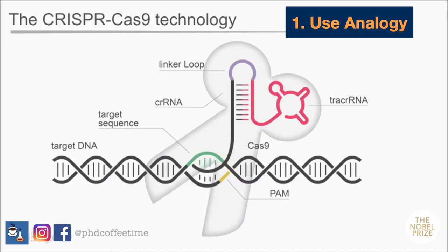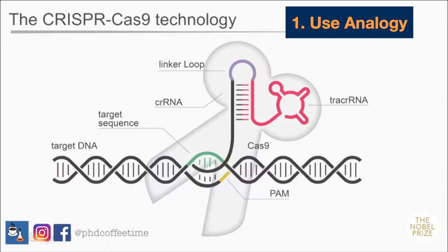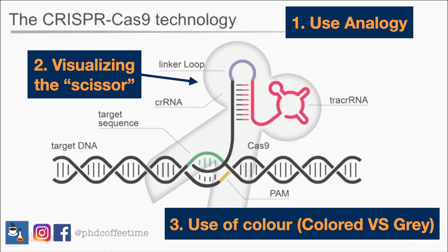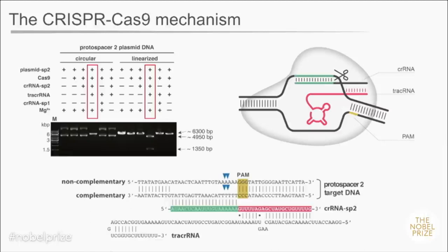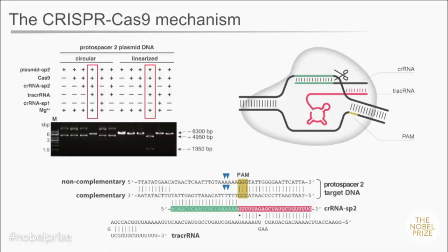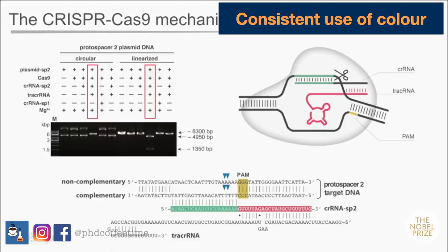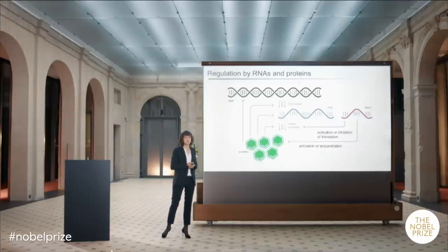A protein component called Cas9 is represented on this slide as scissors — a really great analogy. Two things I really like about it: the actual arrangement, how everything lines up like scissors, and the colour coding. She uses colour in a very cautious manner — only the relevant sections get any colour, everything else is in grey. She highlights sections of different RNA and complementary strands in green and pink, and the gene encoding the protein is drawn in the same shade of blue. A really thoughtful way of using colour.